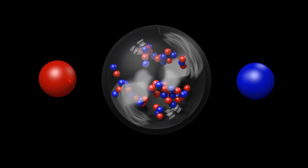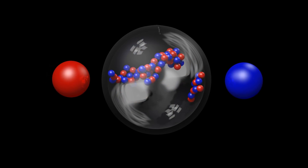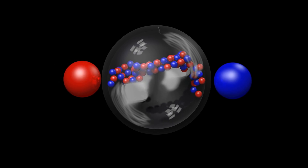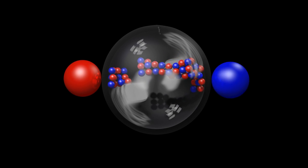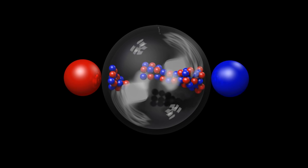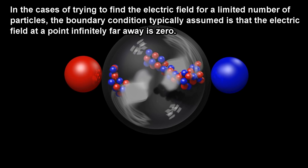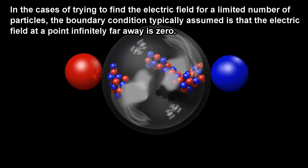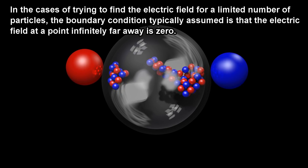As an analogy, Newton's laws of motion will give an infinite number of possible trajectories, unless we are given an initial position and initial velocity. In the cases of trying to find the electric field for a limited number of particles, the boundary condition typically assumed is that the electric field at a point infinitely far away is zero.